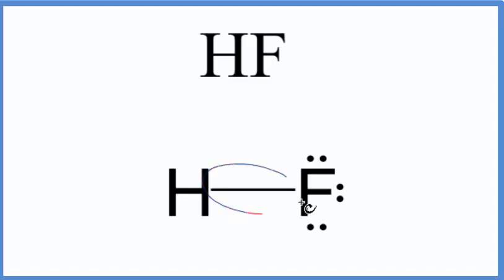This is our Lewis structure, and this line right here represents a pair of electrons shared between the hydrogen and the fluorine atom. That's why they're bonded together, they're sharing those electrons.